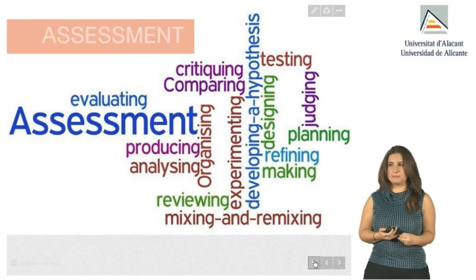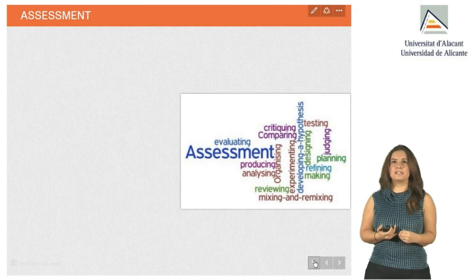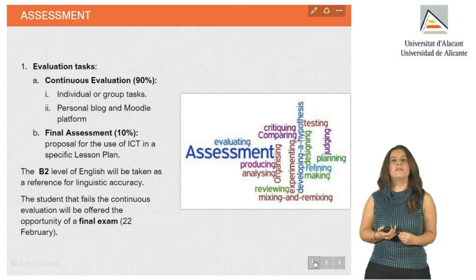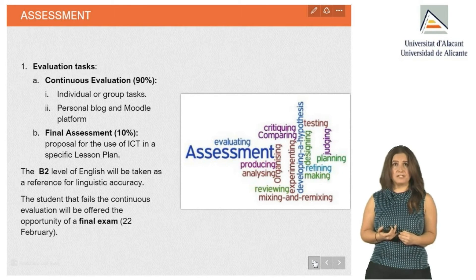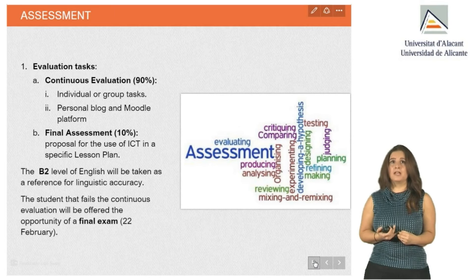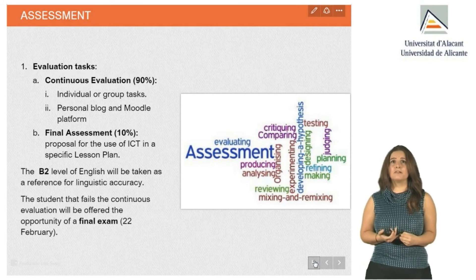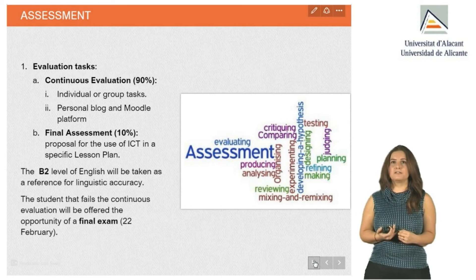Now we go to assessment. The assessment consists of continuous evaluation that accounts for 90% of the mark. It will be based on individual and group tasks and the presentation of a personal blog and a Moodle platform as a portfolio for the course. The presentation of the final task will account for 10% of the final mark. Please remember that a B2 level of English will be taken as a reference for linguistic correction. Students who fail the continuous evaluation or do not submit some course tasks will be offered the opportunity of a final exam, scheduled for the 22nd of February, with a second resit in May.